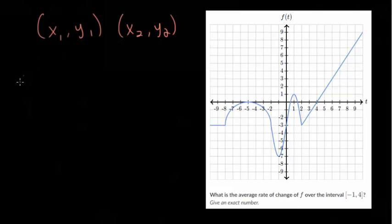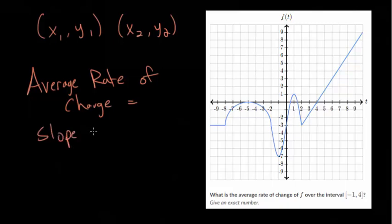So the average rate of change will then just be the slope of that line. Let me write that down. The average rate of change of whatever this function is is just going to be equal to the slope of the line between the two points.